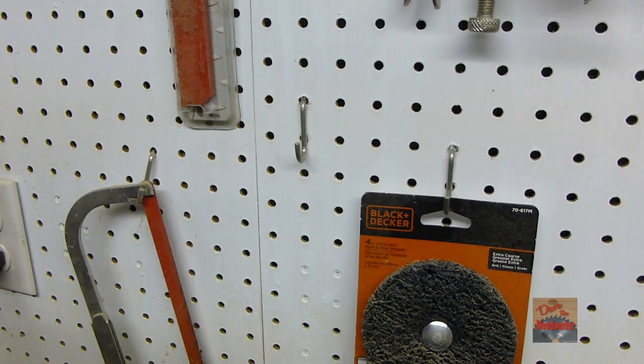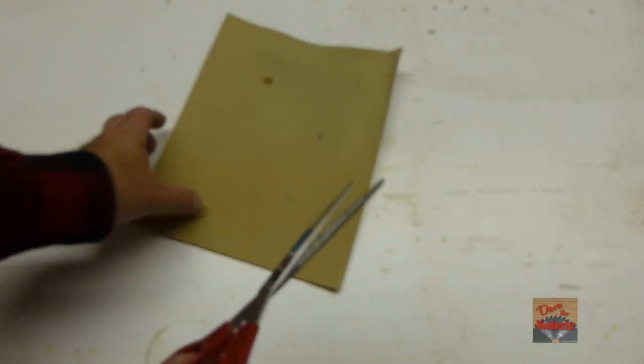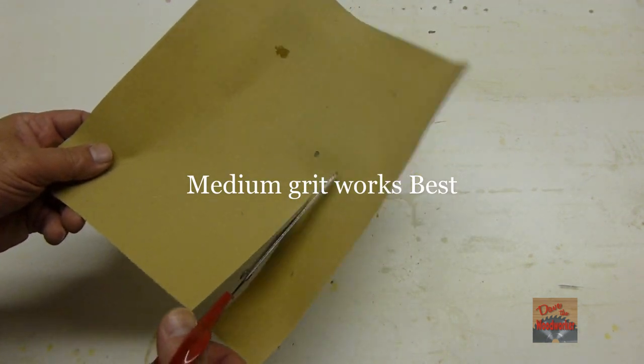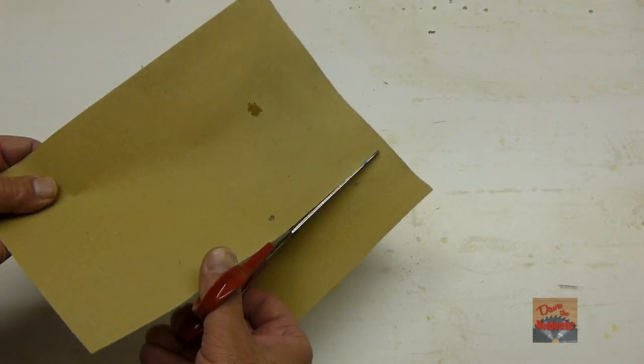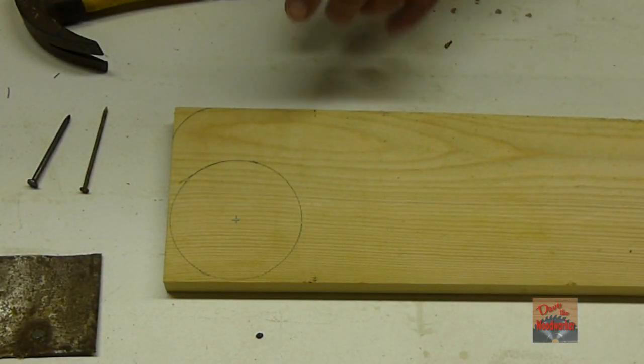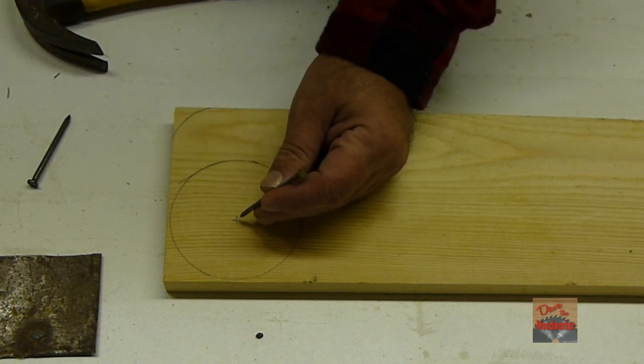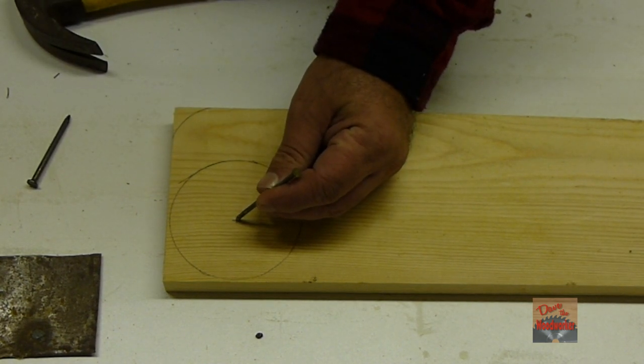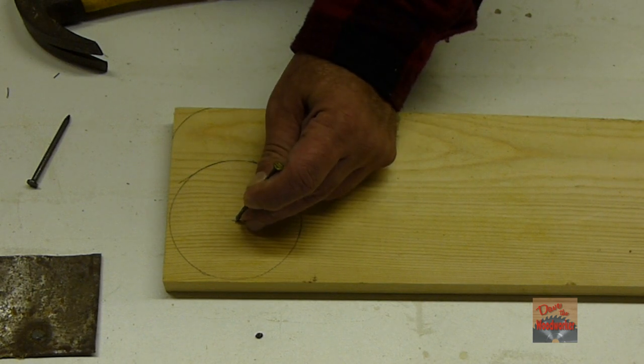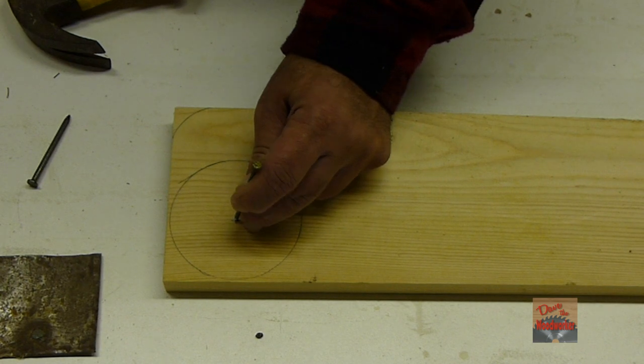If you've got some old scissors in your shop and you want to keep them sharp, cut sandpaper with them—it will sharpen them. If you don't have a center punch or can't find the center punch, use a nail. You don't want to put your drill bit right on there because it'll wander. You want to have a starting point, so line it up on the X. Now you've got a starting point.